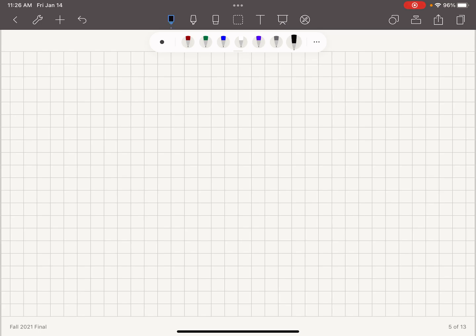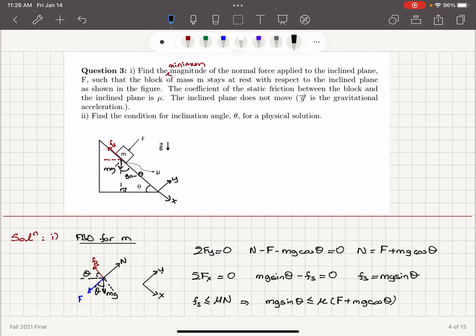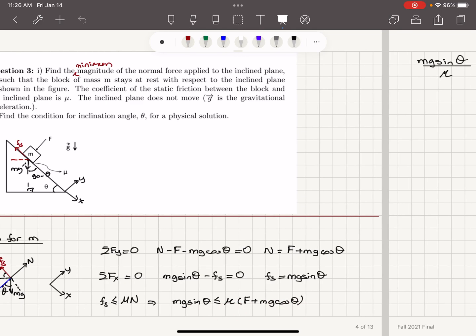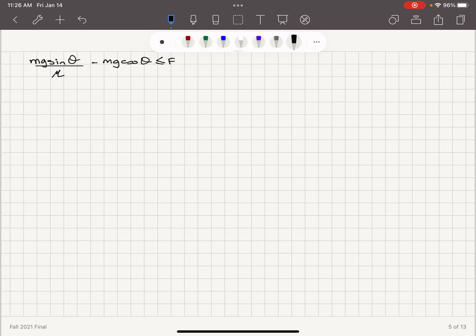Okay, so mg sine theta is less or equal to F. So I take the mu to the left hand side, and then I subtract mg cosine theta. So this gives me a minimum magnitude, F minimum.